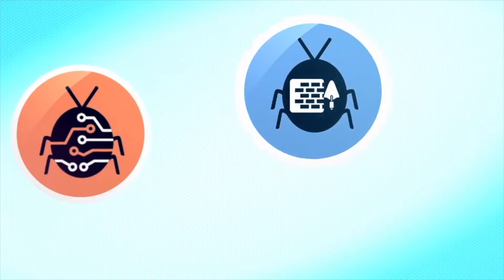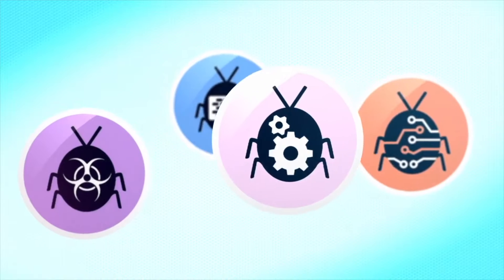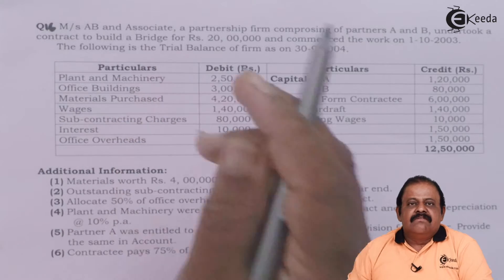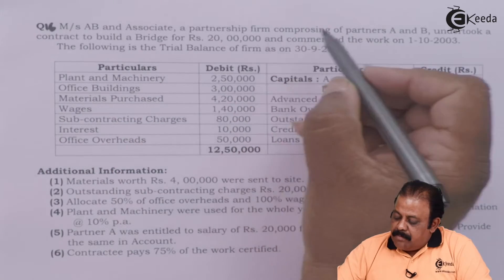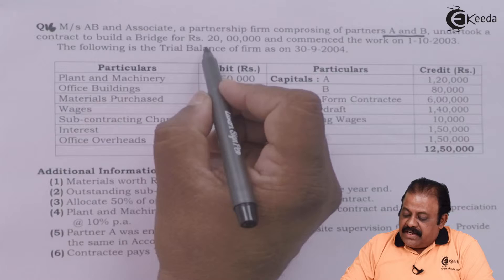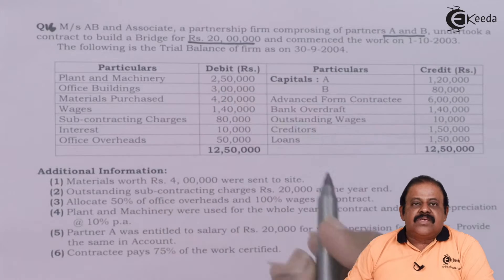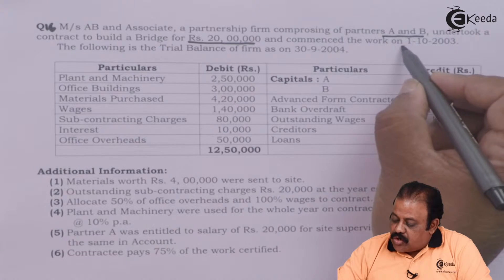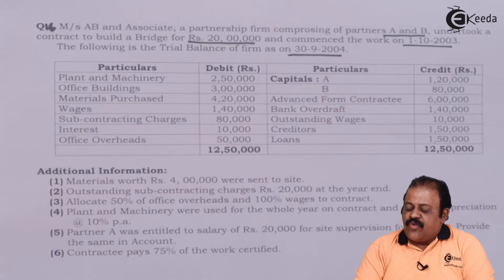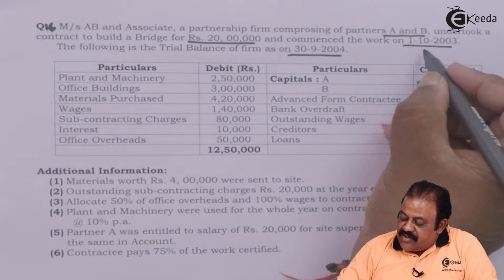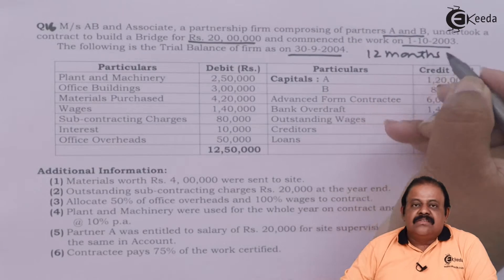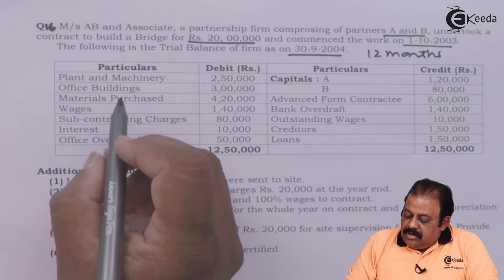The question is: Messrs A, B and Associates — a partnership firm comprising partners A and B — undertook a contract to build a bridge for rupees 20 lakhs. This is the contract price. Work commenced on 1st October, and the trial balance of the firm is as on 30th September 2004, so the contract period is 12 months, that is one year.